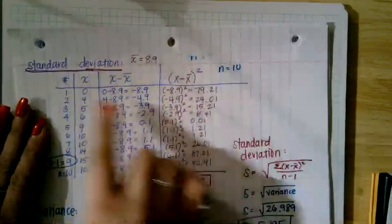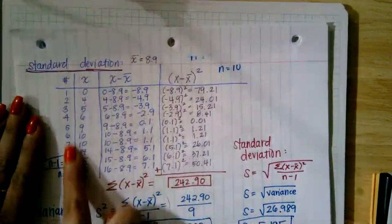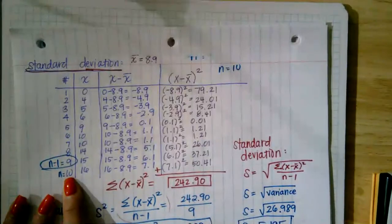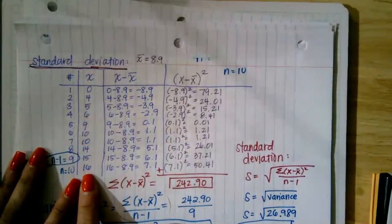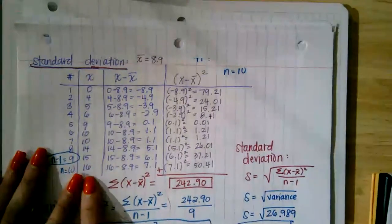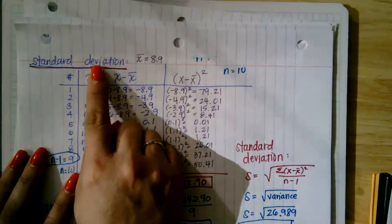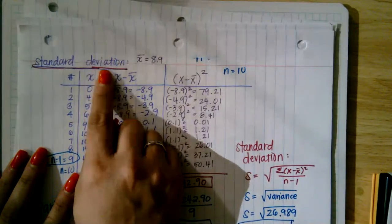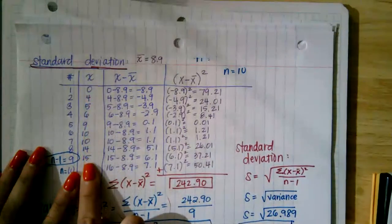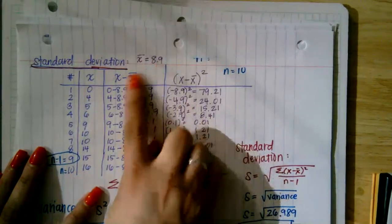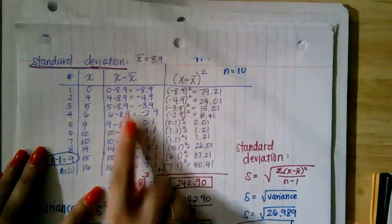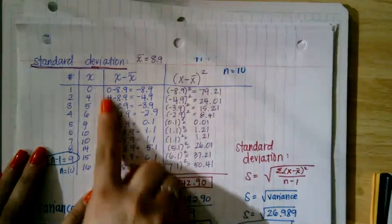I now have a graphic organizer. I'm numbering my data set — I have 10 values. Before, the data set was listed horizontally, but now I'm placing it in a vertical list. Remember, standard deviation is a measure of the average distance away from the mean. I need to compare each value and say: how far away is it from the mean?